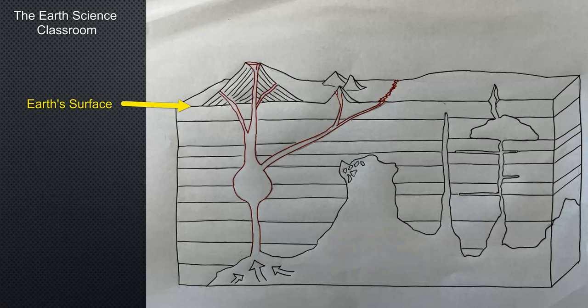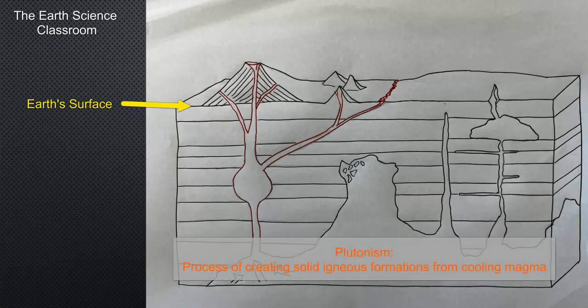We have a thing called plutonism where we form plutons. These plutons are a general term for any igneous intrusive formation or area that is hardened igneous rock formed from the cooling and consolidation and crystallization of magma in some sort of accumulation over a long period of time in terms of millions of years.